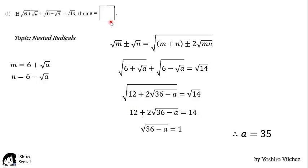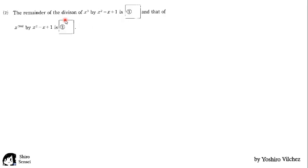Next problem. The remainder of the division of x cubed by x squared minus x plus 1 is? And that of x to the 2007 power by x squared minus x plus 1 is? So the topic here is the polynomial remainder theorem.